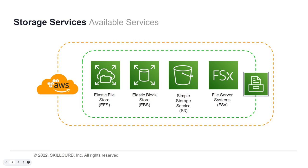Now that you have a general understanding of how cloud storage works, let's take a look at the available services we will find within AWS for cloud storage. Under the hood of storage in AWS, you will see four services. The first one is Elastic File Store — we call that EFS. The second one is Elastic Block Store — EBS. The third is Simple Storage Service, or S3, the most common storage service used within AWS. And the last one is file service systems, known as FSX.